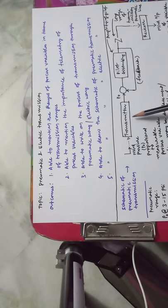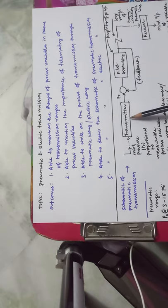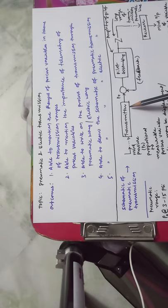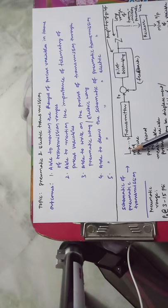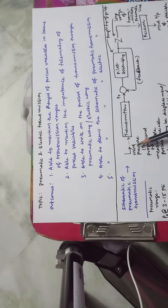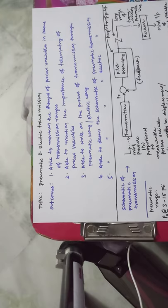This is the transmitter where the signal can be transmitted. Our objective is to transmit the process variable, so in pneumatic transmission the process variable must be transferred in the range of pressure. For example, in viscosity measurement, viscosity is converted to a pressure variable; in density measurement, density is measured in terms of a pressure variable. The process variable may be displacement, level, flow, temperature, density, or viscosity.